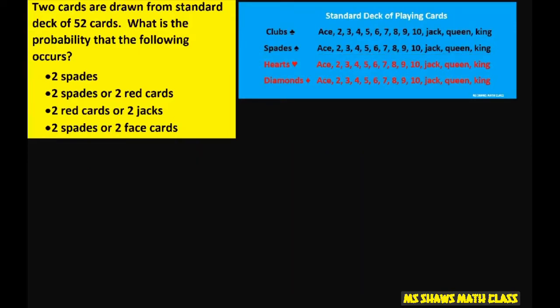Now we're going to do the next problem. The next one is two spades, which we already know, which is 1 divided by 17, or two red cards. Now these are mutually exclusive because spades are not red, so just look at the red cards. That's half the deck, so that's 25 or 26 divided by 52.